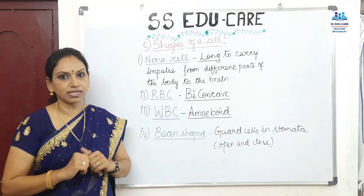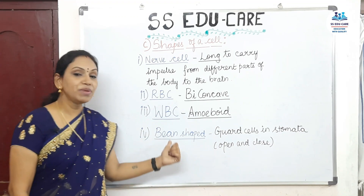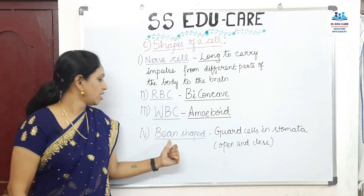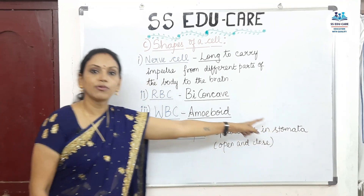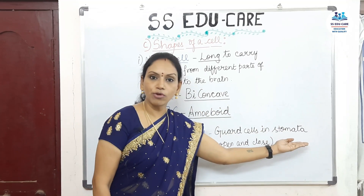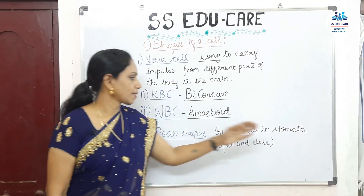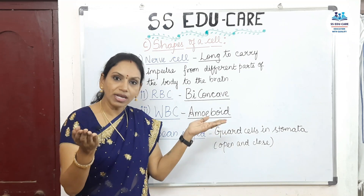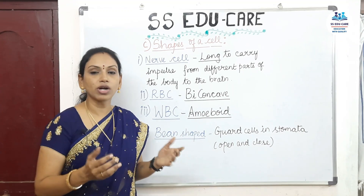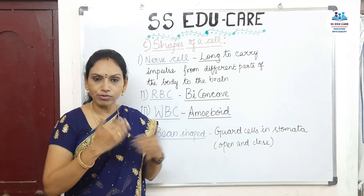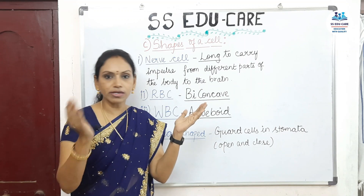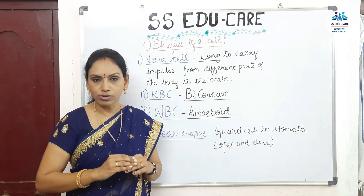WBC has no fixed shape because its function is to protect the body from diseases — it acts like a soldier in the body's defense mechanism. When any foreign particle enters the body, the WBC alters its shape and engulfs and destroys the foreign particle. Fourth are bean-shaped cells, found in guard cells in stomata of plants, especially in leaves. Stomata are meant for respiration — taking in air and releasing unwanted gases. The guard cells open and close during respiration, and the bean shape allows them to open and close effectively.